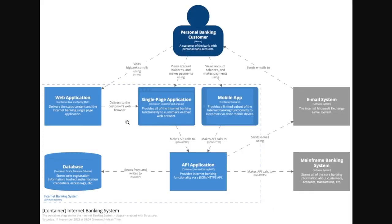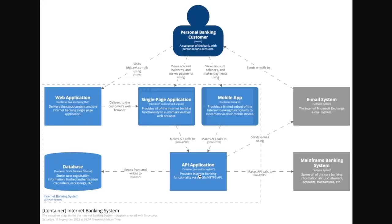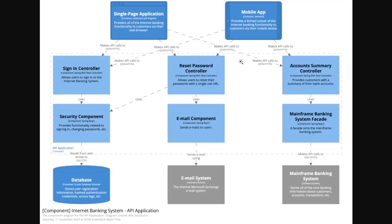Containers are like services, which show the technology choices for the application and the logical grouping of functionality within the system. An expanded look into the container will contain containers like web application container, single sign-on container, API application containers, the database container, and more. From the container, we pick granular details of each container. In this instance, we have a container called API application, which is a combination of the single page application and mobile app.